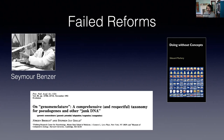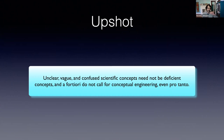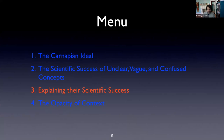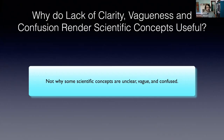Unclear, vague, and confused scientific concepts need not be deficient concepts, and do not call for conceptual engineering — not even prima facie. The question is not why some scientific concepts are unclear, vague, and confused — that would be a question for historical or conceptual genealogy. The functional question I'm asking is: what's the point of having such concepts? The usual answer from historians and philosophers of biology is that those concepts are inter-field concepts — concepts at the intersection of various scientific fields or research traditions.